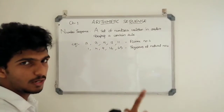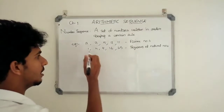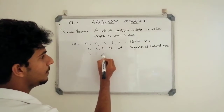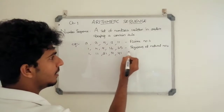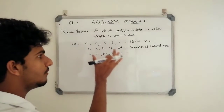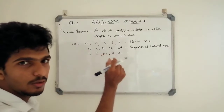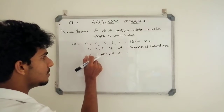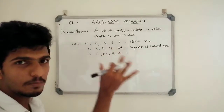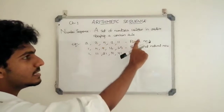Another example: 1, 11, 21, 31, 41 — these are numbers ending with 1. This is a number sequence. The first term is 1, the second is 11, the third is 21. A set of numbers written in order, obeying a certain rule.